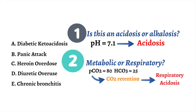Using this information alone, we can eliminate some answers. We have a primary respiratory acidosis, so we can eliminate any metabolic disorders. Diabetic ketoacidosis causes a metabolic acidosis, so we can eliminate it. Next, diuretic overuse causes a contraction alkalosis or a metabolic alkalosis, so we can eliminate it as well. Finally, panic attacks lead to hyperventilation with short, shallow breaths that leads to rapid CO2 expulsion — panic attacks cause a respiratory alkalosis. Given our patient's ABG findings, we can eliminate panic attacks as we are dealing with a respiratory acidosis.